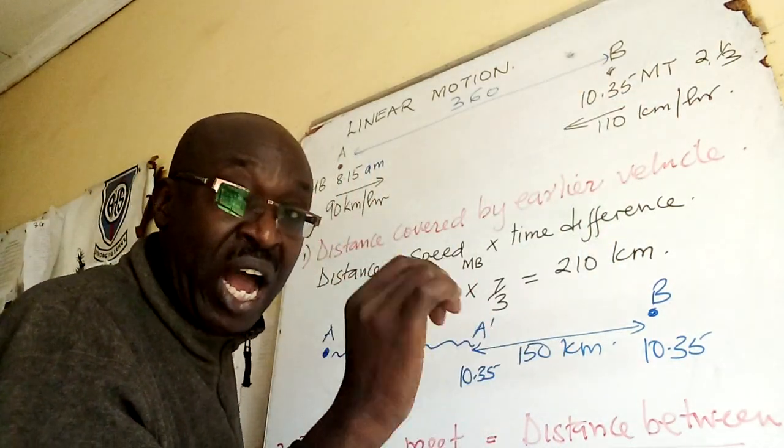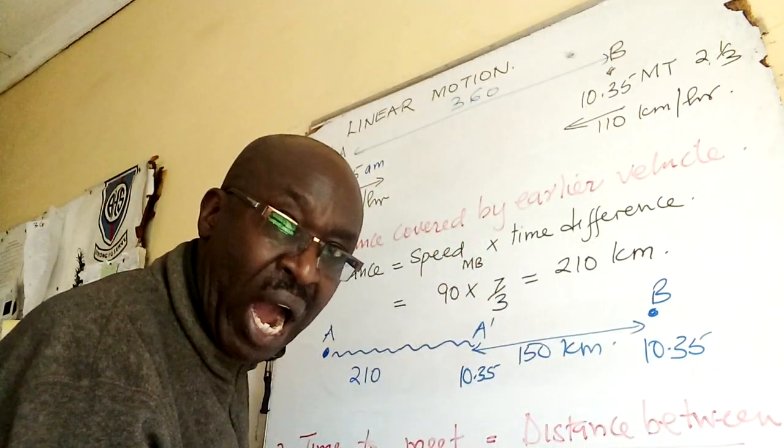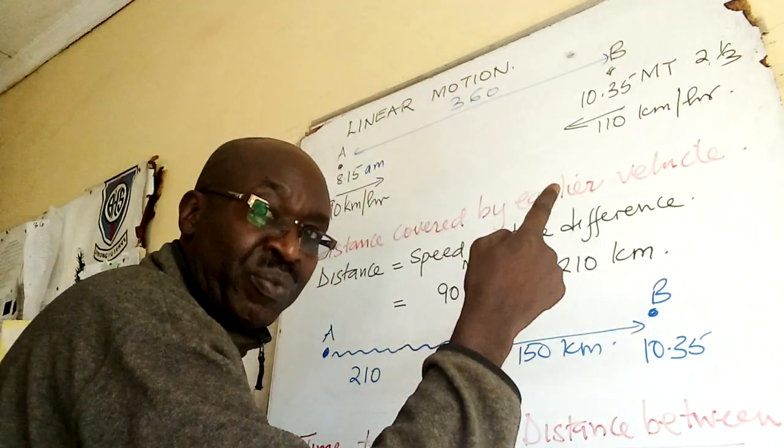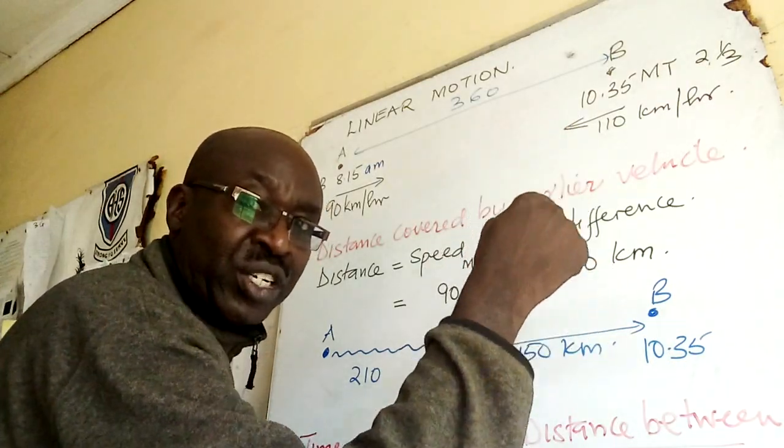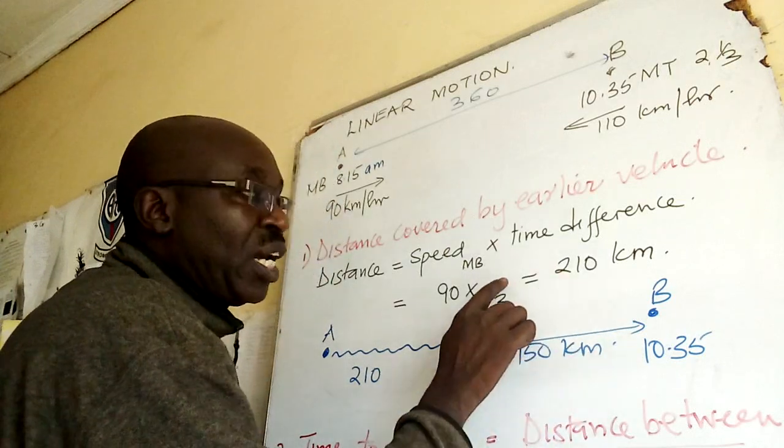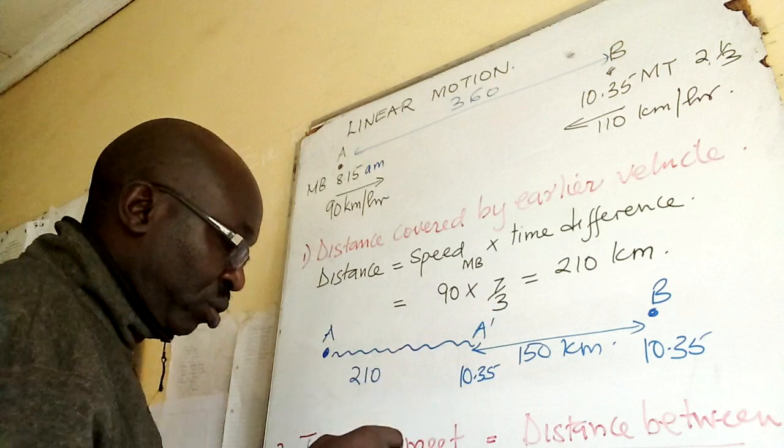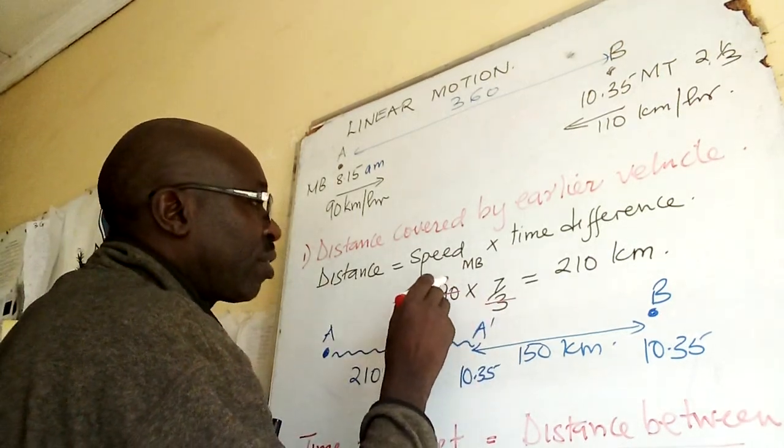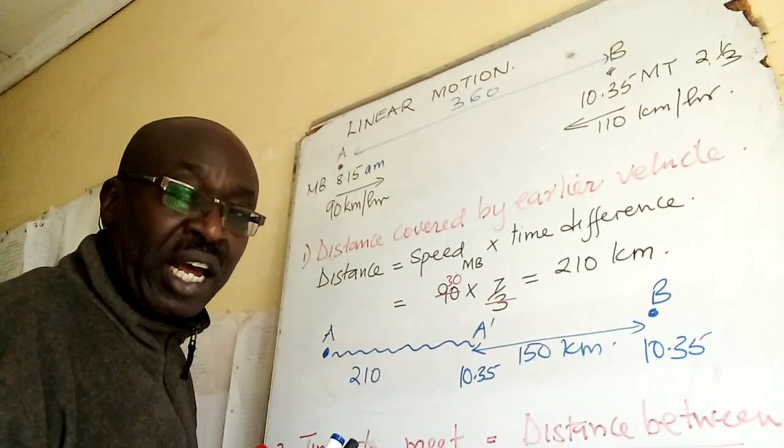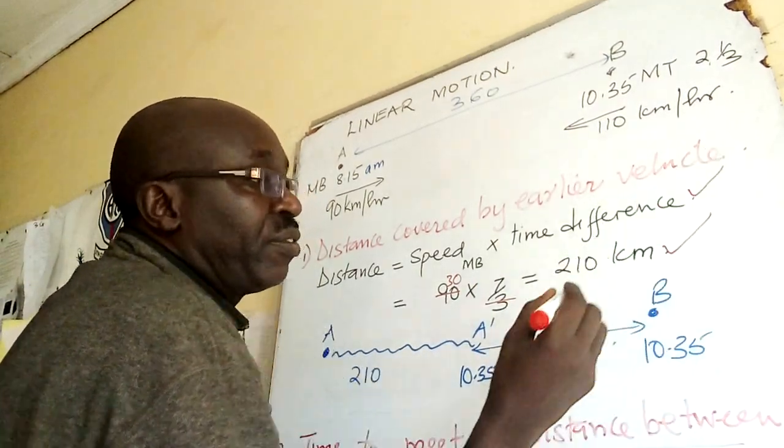Its speed is 90, time difference is two and a third. It has to be in hours, so even if I had subtracted 10:30 minus 8:15, I would have gotten two hours 20 minutes. You convert everything into hours which gives us 7/3.